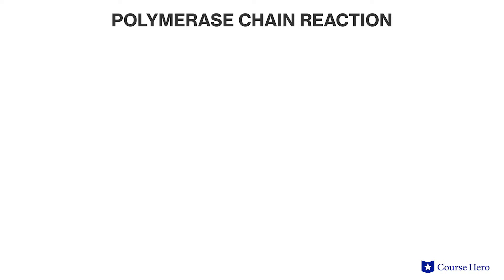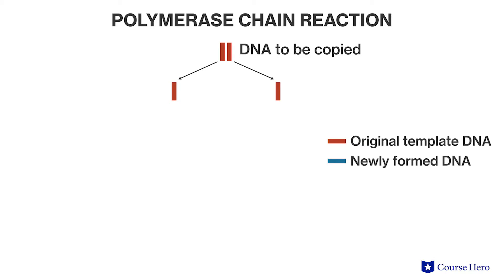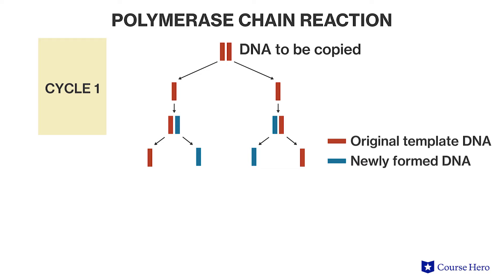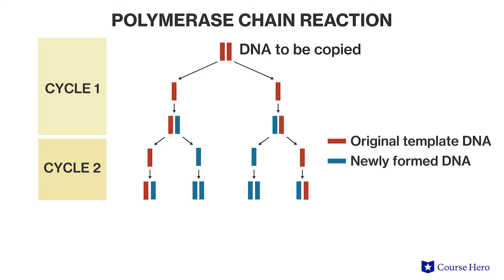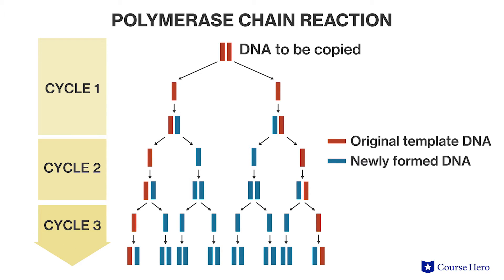First, DNA is separated into two strands. Each strand is exposed to a DNA primer and DNA polymerase, which allows the DNA strands to replicate using actions similar to those in DNA replication. After one cycle, the original template strand has been copied, resulting in four single strands of DNA. The cycle is repeated, but this time each of the four single strands acts as the template strand. With each cycle, the number of copies of DNA grows exponentially, and billions of copies can be made from a single piece of DNA in just a few hours.